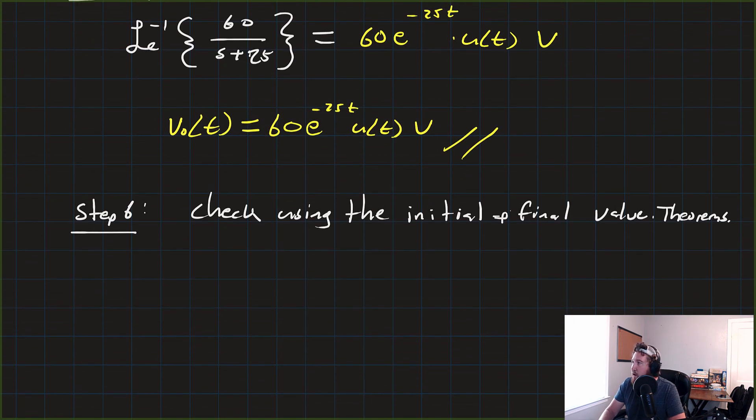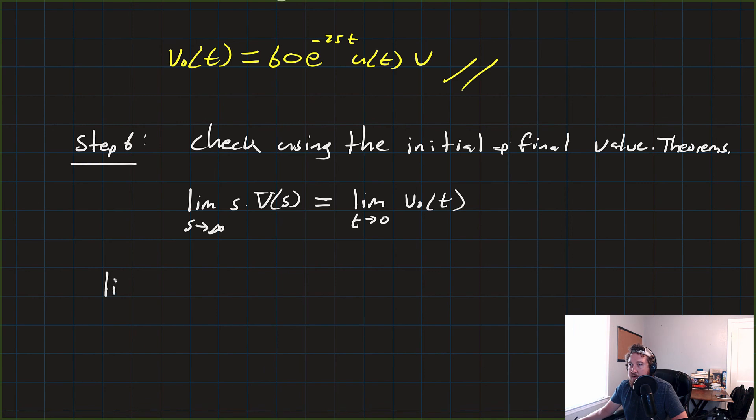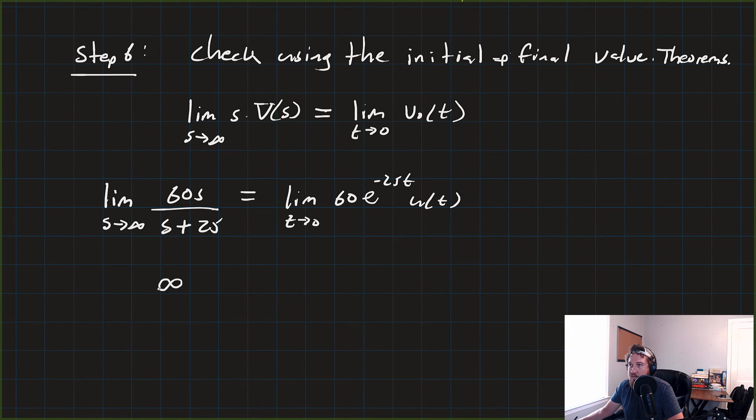This just makes sure that we didn't make any mistakes along the way because when we're all done, these things should hold true. The first one is that the limit as S approaches infinity of S times V(S) should equal the limit as T approaches 0 of our V-naught of T. So we'll go ahead and check on those. So we've got the limit as S approaches infinity of S times our V of S. So we're going to have 60S over S plus 25 is equal to the limit as T approaches 0 of 60e to the minus 25t times U(T).